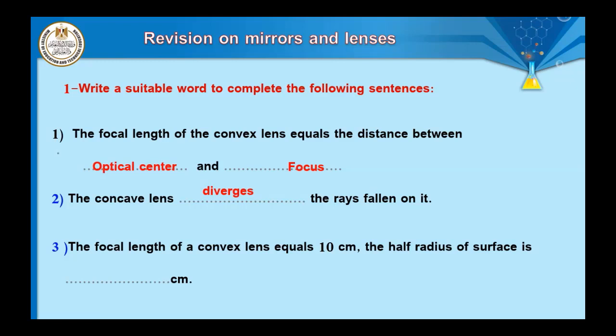Question number three: the focal length of a convex lens equals 10 cm. The radius of the surface is ___ cm. We know the relation between focal length and radius: radius equals double the focal length, and focal length equals half the radius. So when the focal length equals 10 cm, the radius of the surface also equals 10 cm — because they are equal in this case.